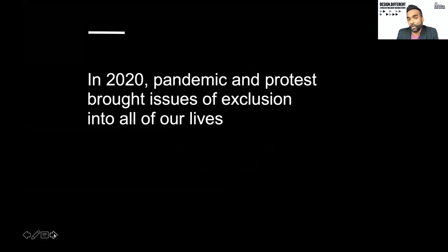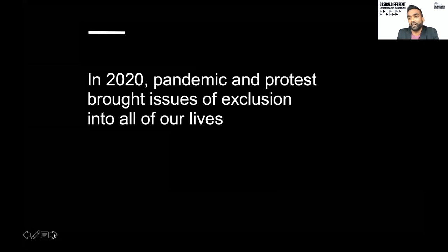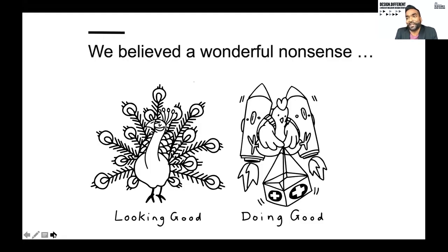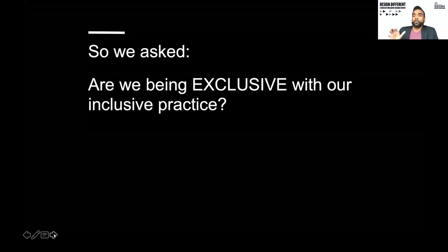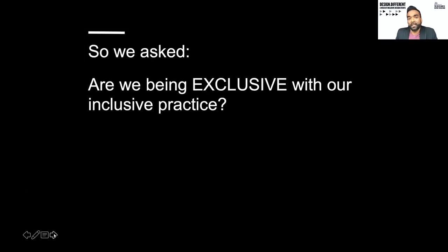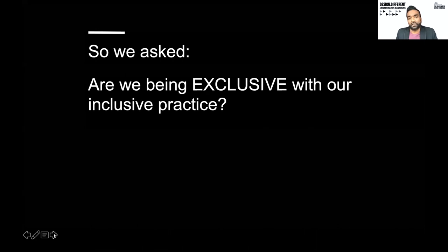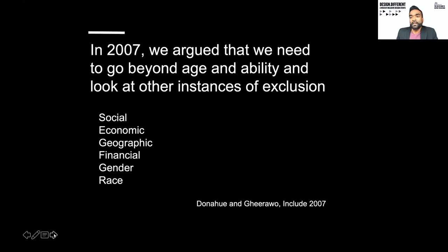In 2020, pandemic and protest brought issues of exclusion into all of our lives and we were suddenly challenged in ways we weren't previously. We all believe the wonderful nonsense — like the peacock on the left strutting around and looking good. But I love this picture of the chicken on the right: she's strapped rockets to her back and is lifting a first aid box somewhere. Inclusive design in a global context can be messy and sometimes fractured, but it is positive. We need that shift from looking good to doing good. Are we being exclusive with our inclusive practice?